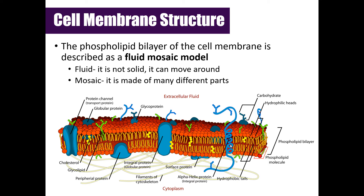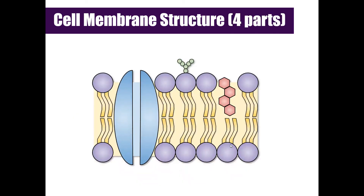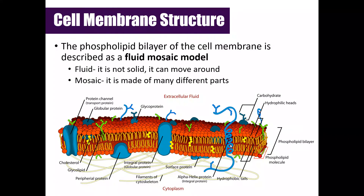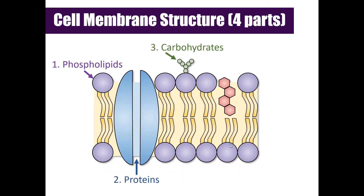The fluid mosaic model was actually developed in 1972, and although this model has evolved over time, it still provides a really good basic description of the structure and behavior of the plasma membrane. For this particular lesson, we're going to focus on the four key components: phospholipids, proteins, carbohydrates, and cholesterol. We're going to walk through and talk about what each of these components does for the cell membrane.